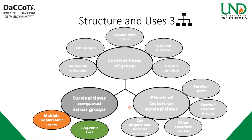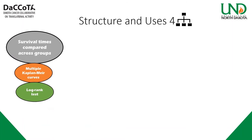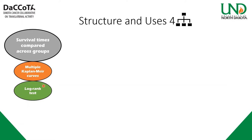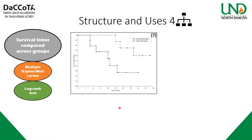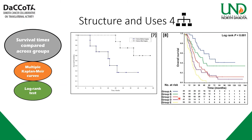Let's turn our attention to survivor times compared across groups — very similar to our first concept with a little more bells and whistles. Just because we have multiple groups doesn't mean we can't have multiple Kaplan-Meier curves. For example, with chemo before or after surgery — we see that those with chemo before surgery had worse outcomes than those who had chemo after. You don't even need to stop at two; you can look at as many groups as you want.